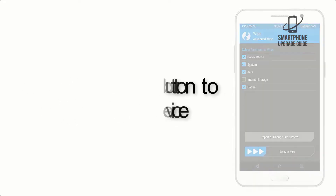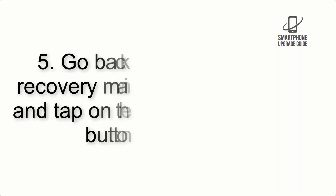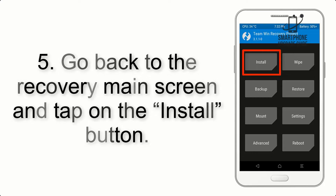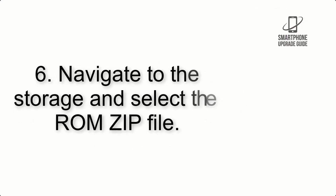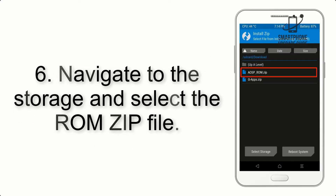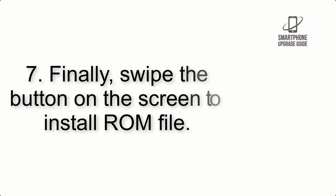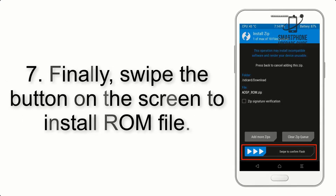Step 4: Swipe the button to wipe the device. Step 5: Go back to the recovery main screen and tap on the Install button. Step 6: Navigate to the storage and select the ROM zip file.